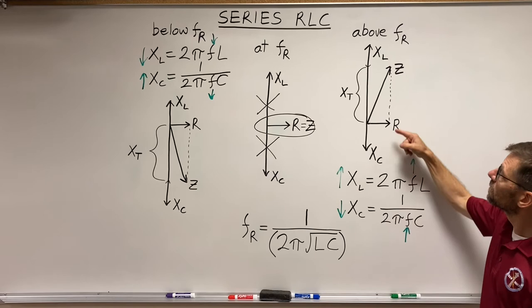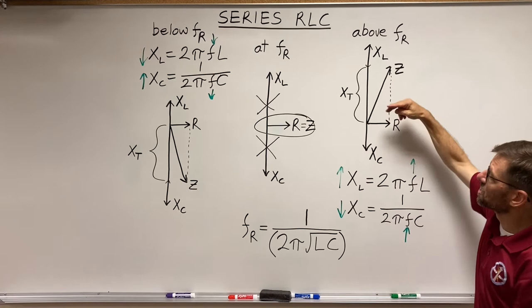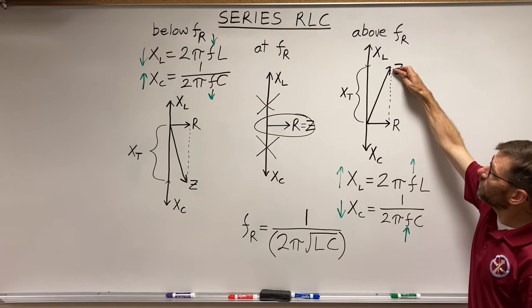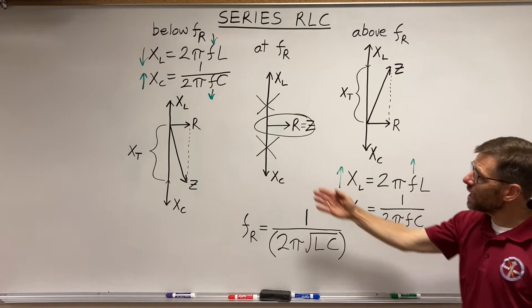So above frequency, same thing as over there, except in reverse. There's a net reactance pointing up into inductive territory. So my resistance added vectorally to my total reactance gives me an increasing Z. Do you see how either way, below or above resonance, the Z got bigger?